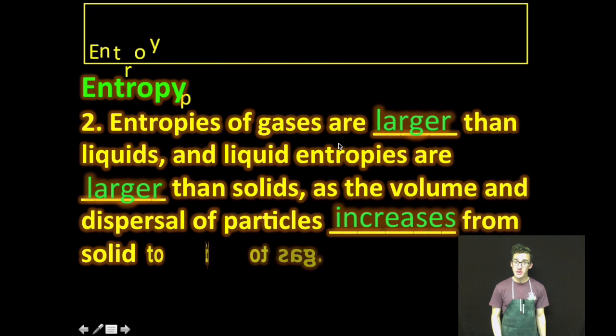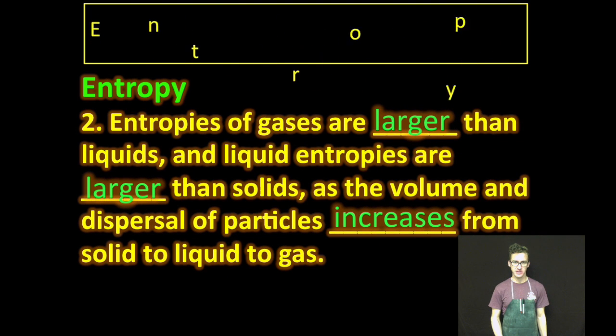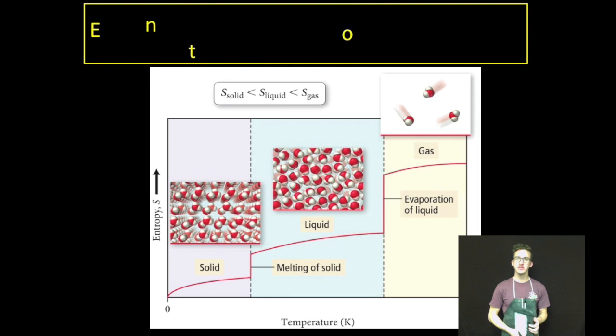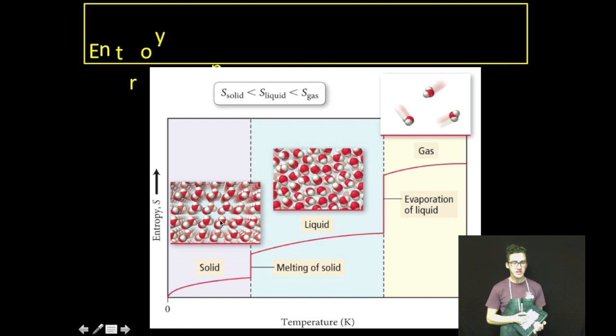Second, entropies of gases are larger than liquids and liquid entropies are larger than solids because the volume and dispersal of particles increases from solid to liquid to gas. So, as you take a look at this thrilling image that's on your screen, think about water in the solid state versus the liquid state versus the gas state. Entropy increases as we go from solid to liquid to gas. The particles are more spread out and they're more disordered. Very organized in a solid, very unorganized, very disordered in the gas. Boom.